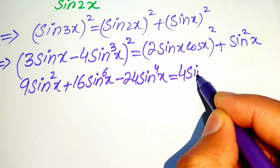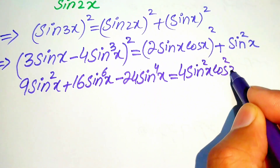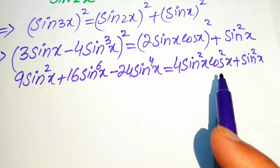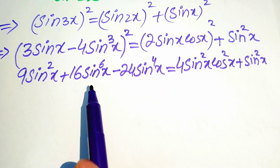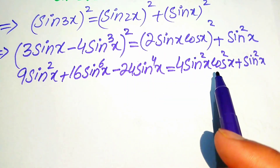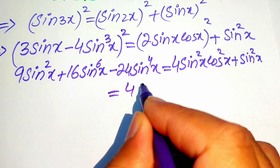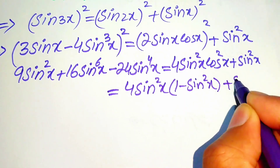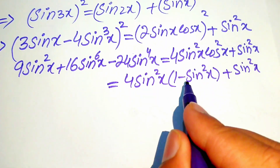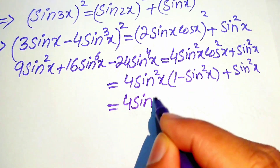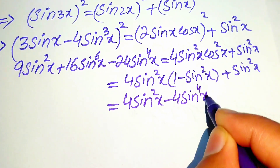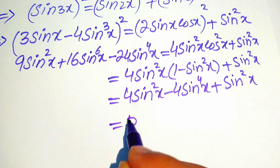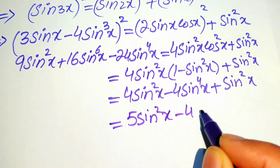Expanding the right side: we have 4 sin²x · cos²x + sin²x. We convert cos²x = 1 − sin²x, giving 4 sin²x(1 − sin²x) + sin²x = 4 sin²x − 4 sin⁴x + sin²x = 5 sin²x − 4 sin⁴x.